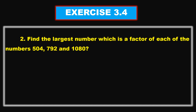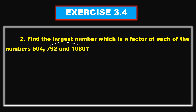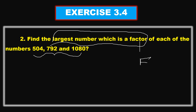Let me take the second question: Find the largest number which is a factor of each of the numbers 504, 792 and 1080. We need to find the factors of these numbers and pick out the largest common one. So 'factor' means F, and 'common factor' means CF. The largest common factor is nothing but the Highest Common Factor, so we need to find out the HCF.